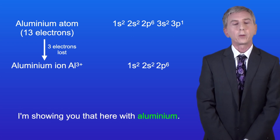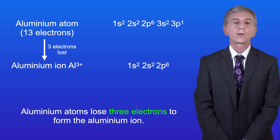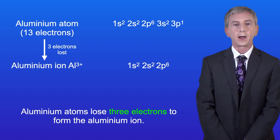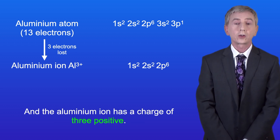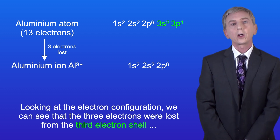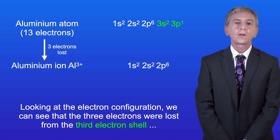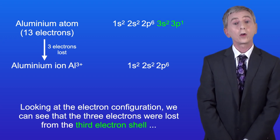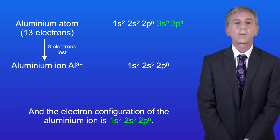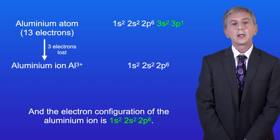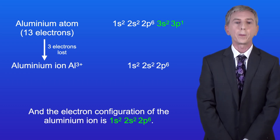I'm showing you that here with aluminium. Aluminium atoms lose three electrons to form the aluminium ion, and the aluminium ion has a charge of 3 positive. Looking at the electron configuration, we can see that the three electrons were lost from the third electron shell, and the electron configuration of the aluminium ion is 1s2, 2s2, 2p6.